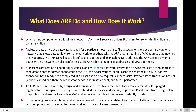Any new computer when it joins a local area network will require a unique IP address for identification and communication. When a packet of data arrives at a network gateway destined for a particular host machine, the gateway — the piece of hardware on a network that allows data to flow from one network to another — will ask the ARP program to find a MAC address that matches the IP address. The ARP cache will keep a list of each IP address and its matching MAC address.